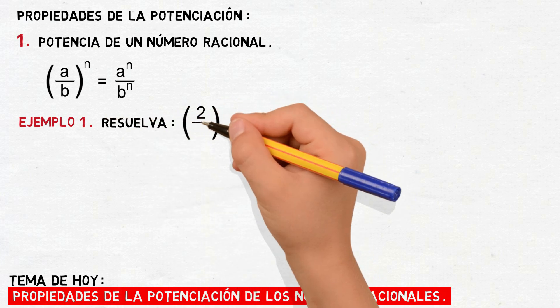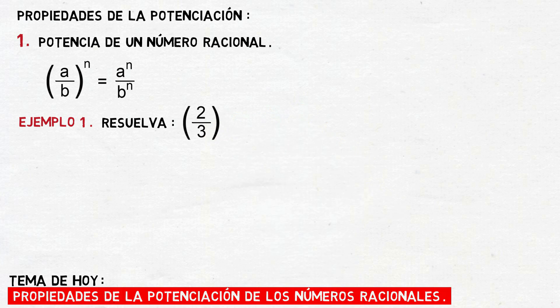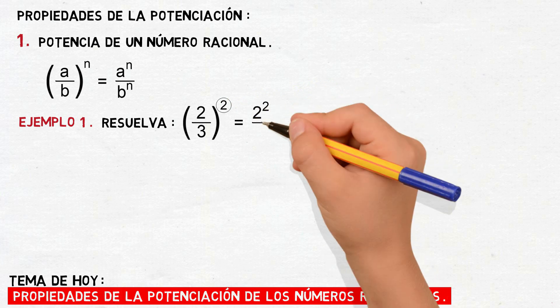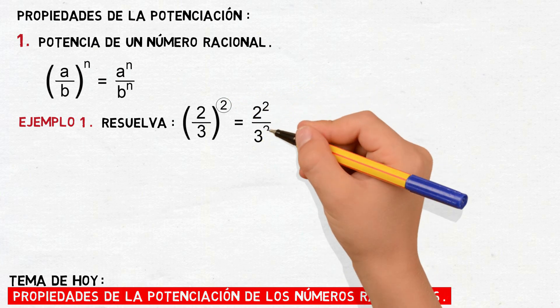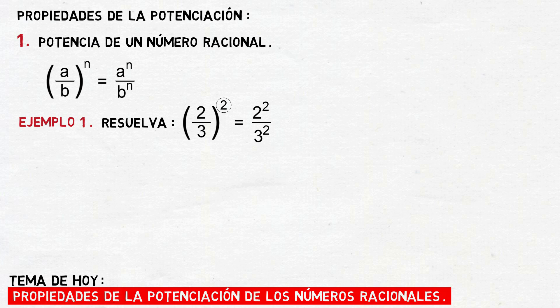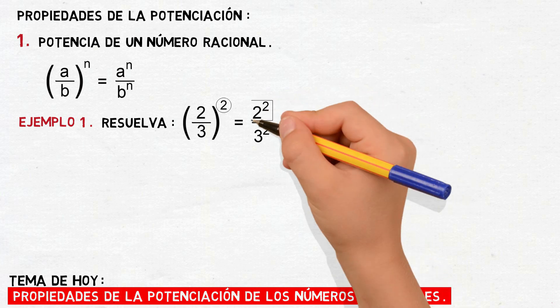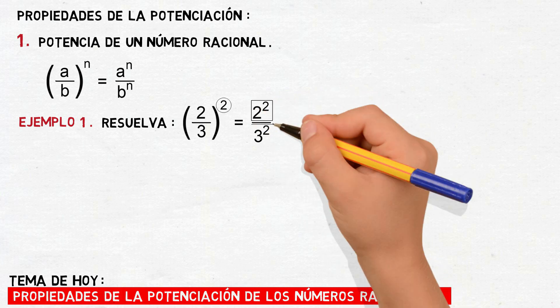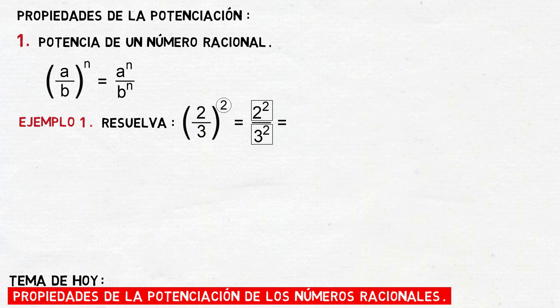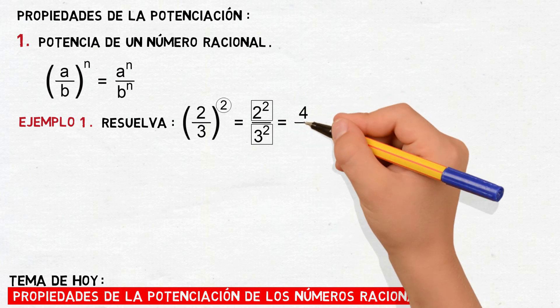Resuelva: 2 tercios elevado al cuadrado. Aplicando la propiedad de la potencia de un número racional, esto va a ser igual a elevar al cuadrado el numerador y elevar al cuadrado el denominador. Luego, resolviendo ambas potencias, esto va a ser igual a 4 novenos.